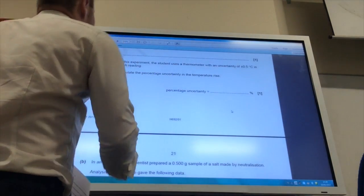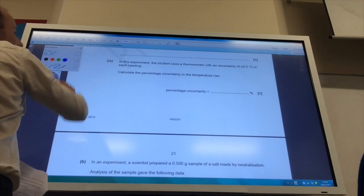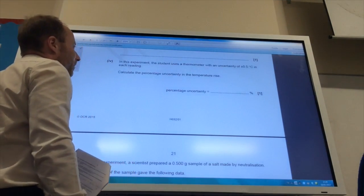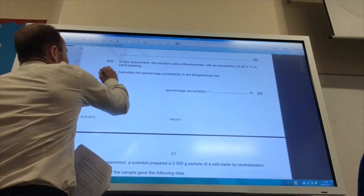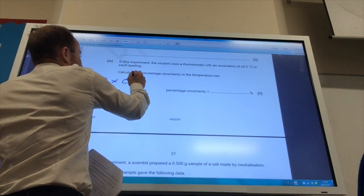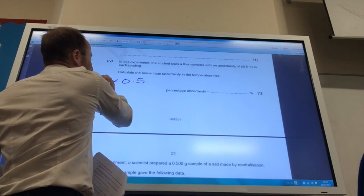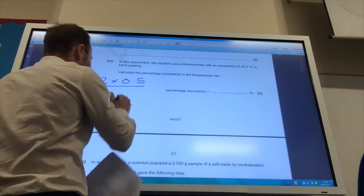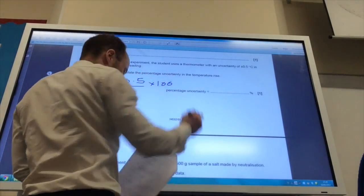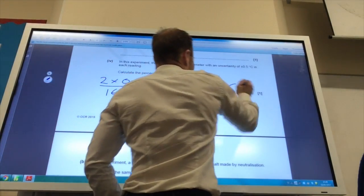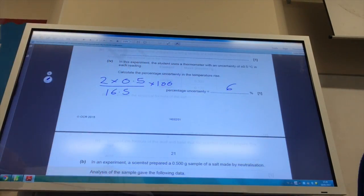In this experiment, the student uses a thermometer, and we're in uncertainty of 0.5 degrees C in each region. What's the error? I use the thermometer twice, so it's 2 times 0.5 divided by the value, the temperature difference was 16.5, times 100, and your percentage uncertainty is 6%.